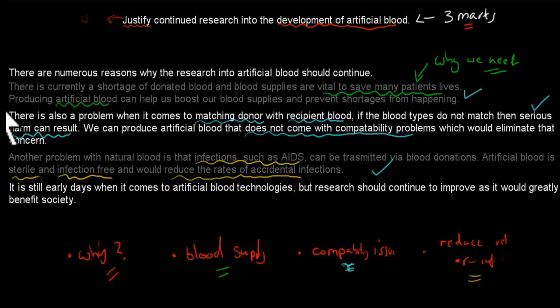And then I just wrote a concluding statement. It's still early days when it comes to artificial blood technologies, but research should continue to improve as it would greatly benefit society. This is just saying that we should continue, and these were the reasons why. That would give you three marks out of three for mentioning these three points, and also explaining why as well. Don't just mention, but mention why that would be a good thing.